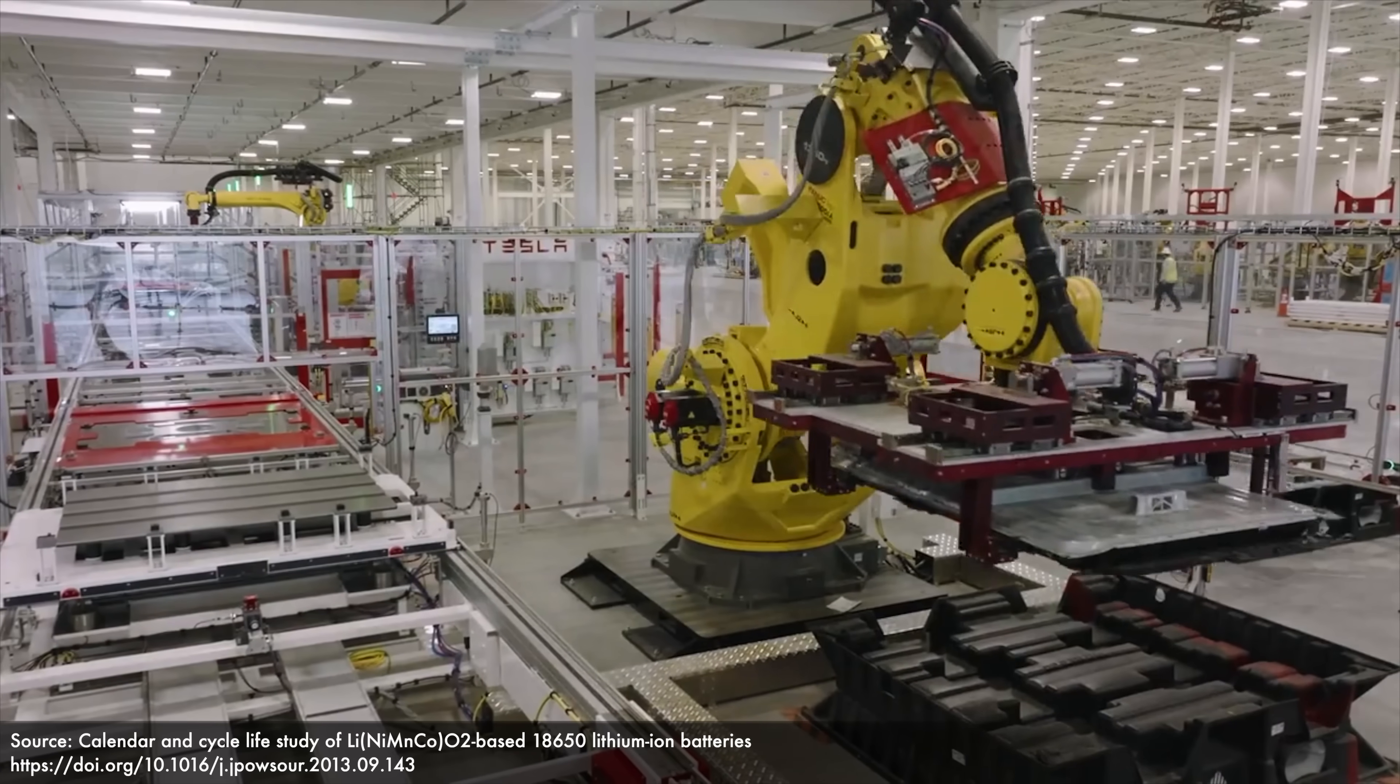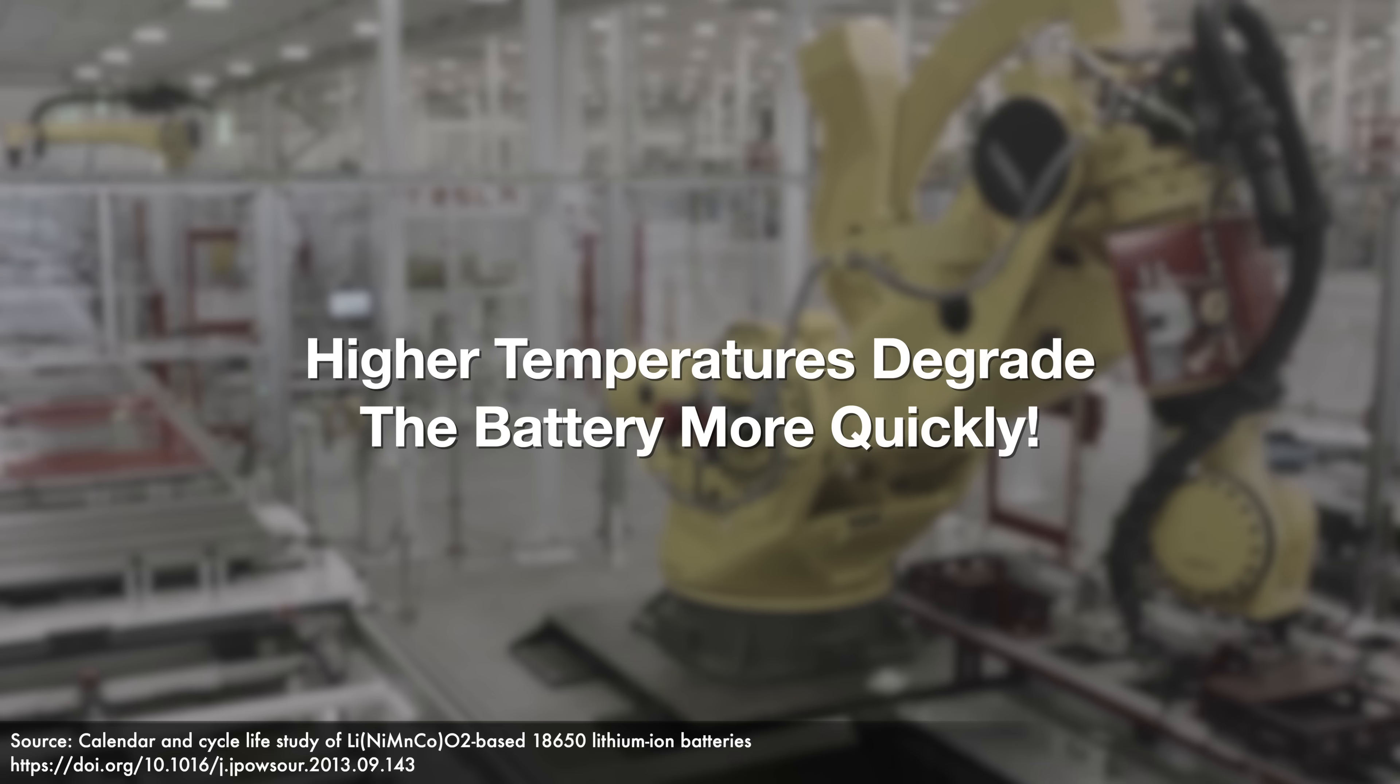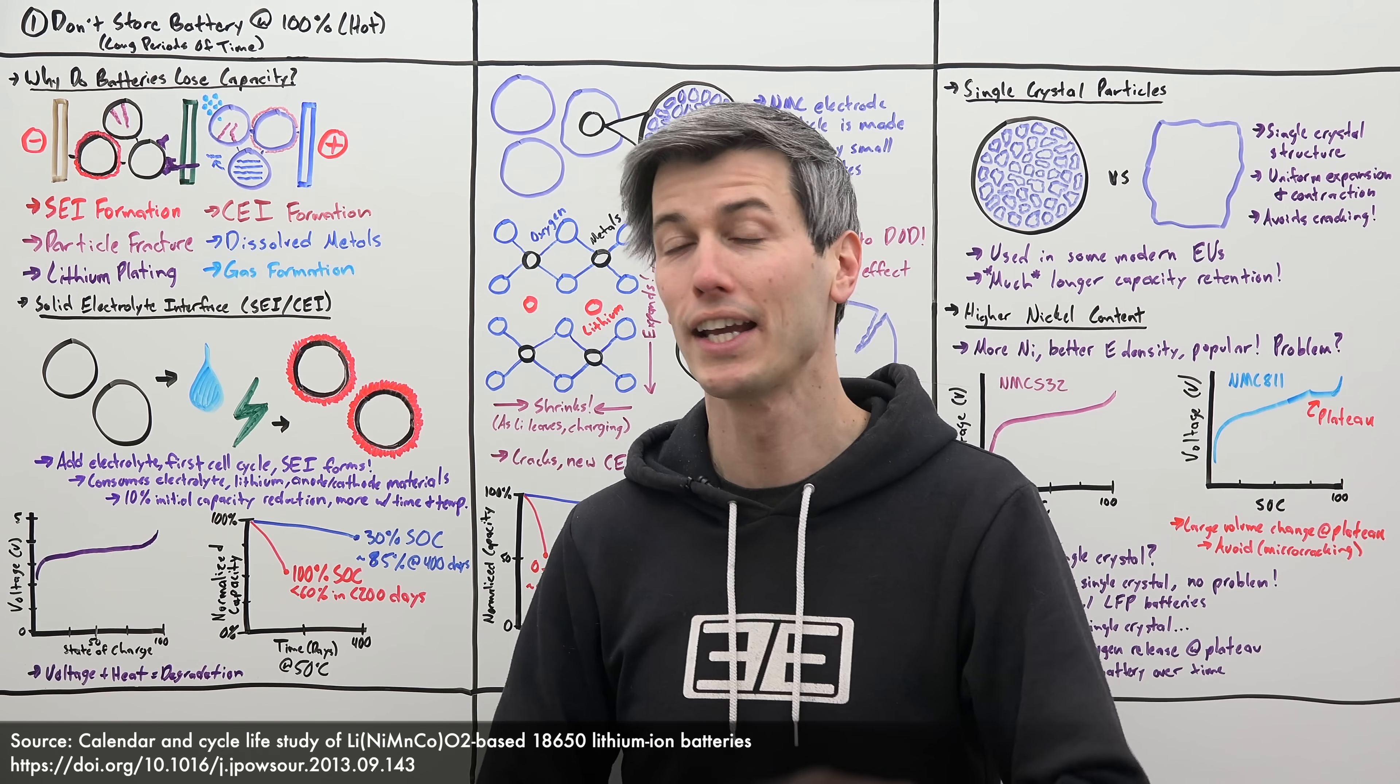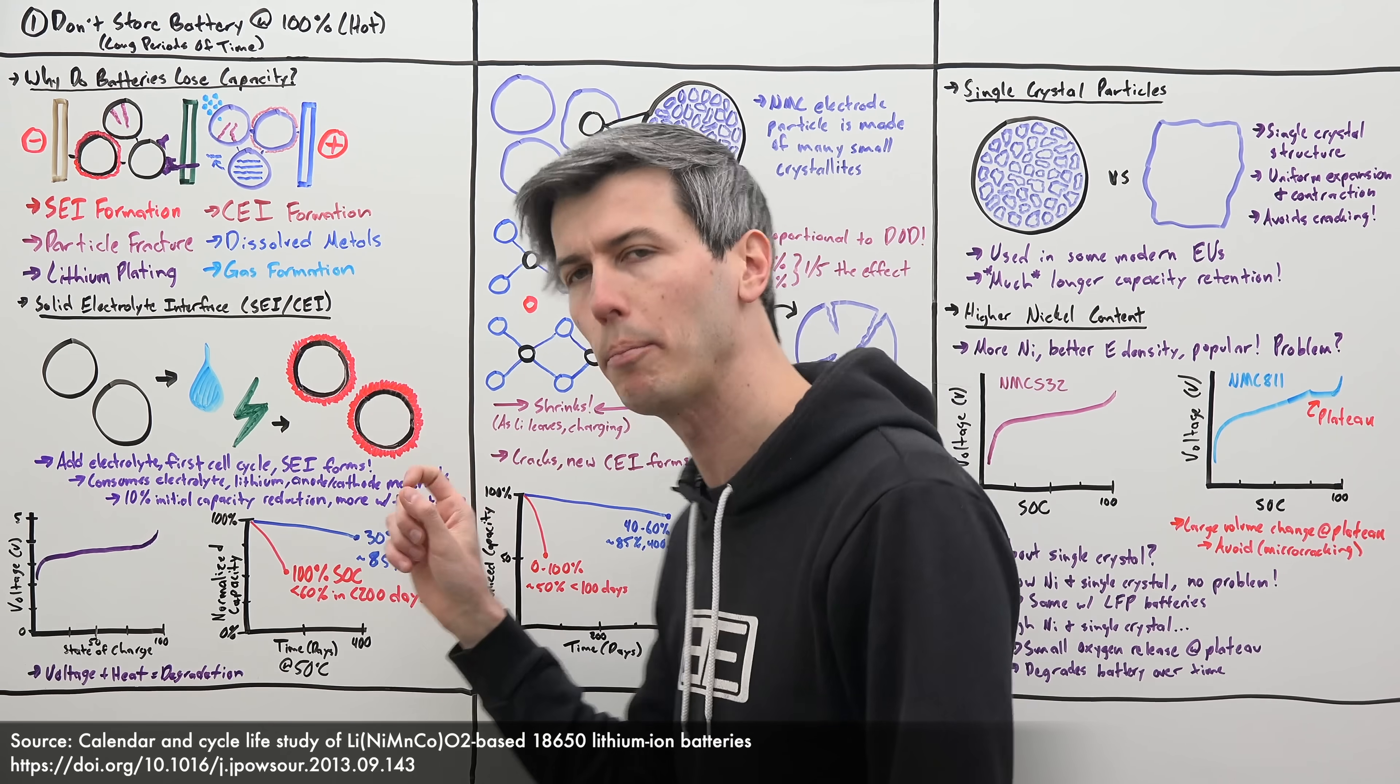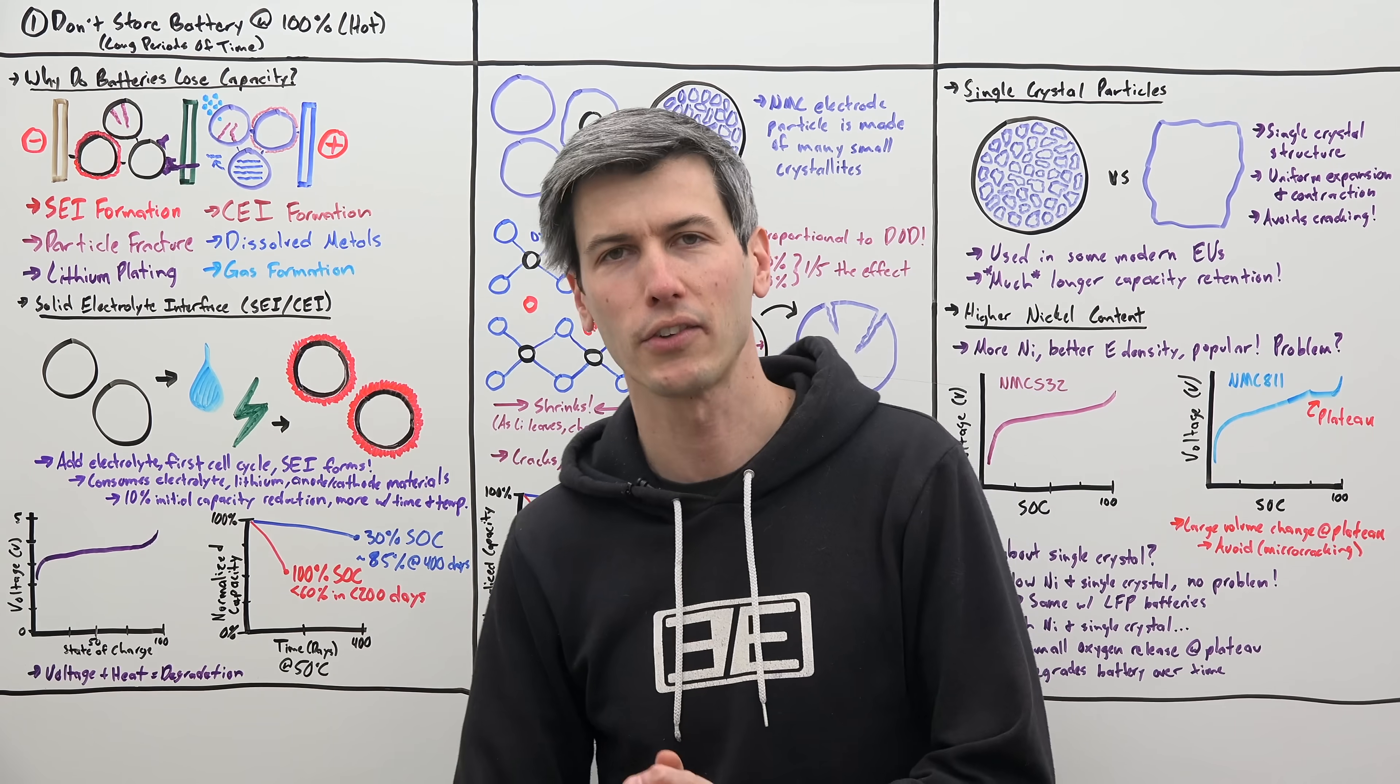Now there was a really cool study done where they found that if you store a battery at a higher temperature, it has more degradation. But they also found that if you store a battery at a higher state of charge, it also has more degradation. So what did they do? They took a bunch of batteries and they stored them in a room at 50 degrees Celsius, so very warm.